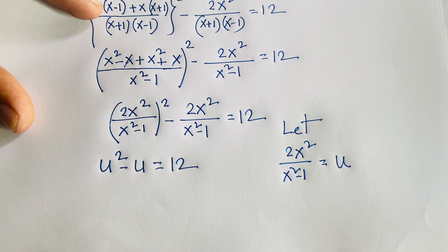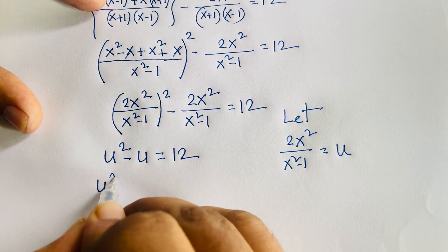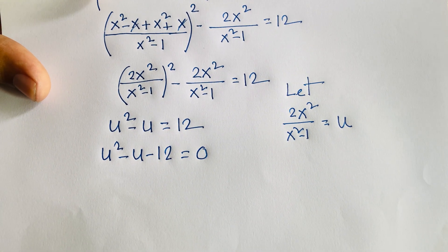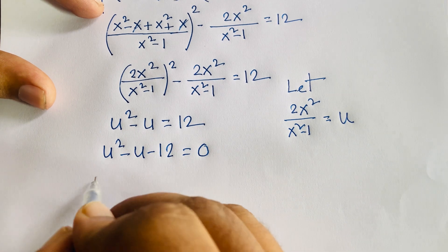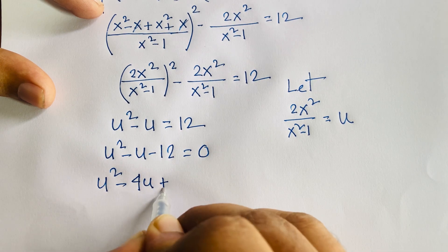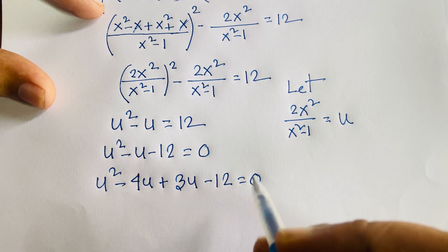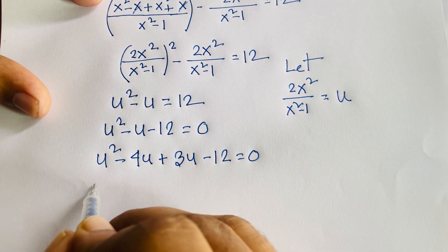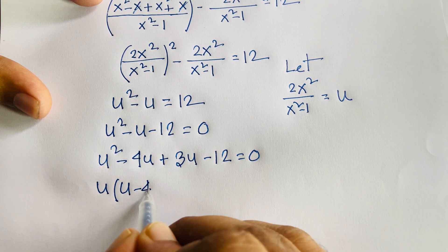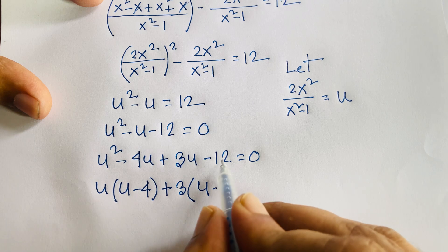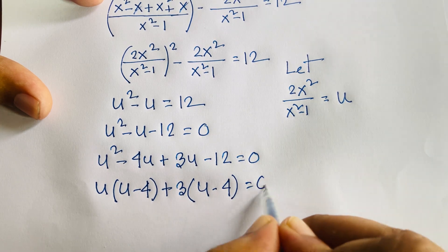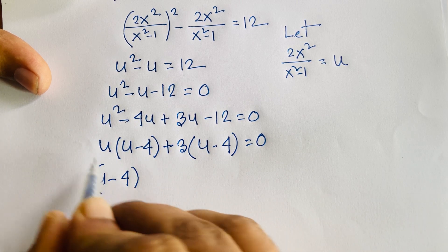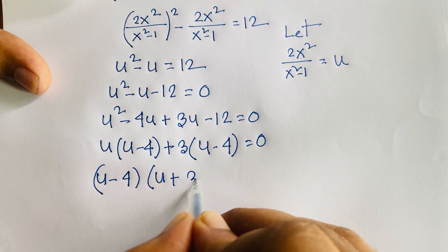This is a quadratic equation. Rearranging: u² minus u minus 12 equals 0. Using the middle-term factoring method: u² minus 4u plus 3u minus 12 = 0, since 4 times 3 = 12 and 4 minus 3 = 1. Factoring gives u(u-4) plus 3(u-4) = 0, so (u-4)(u+3) = 0.